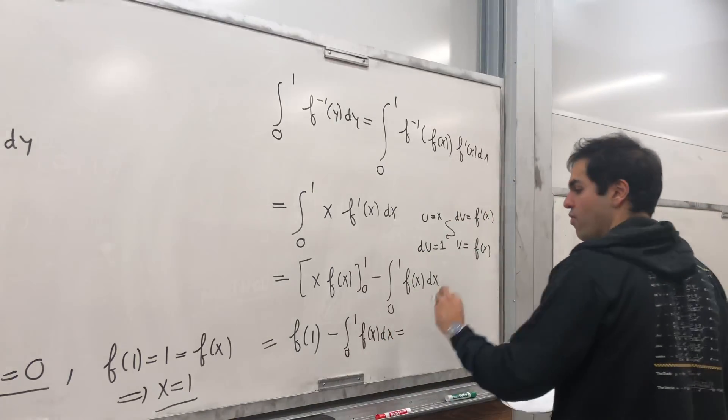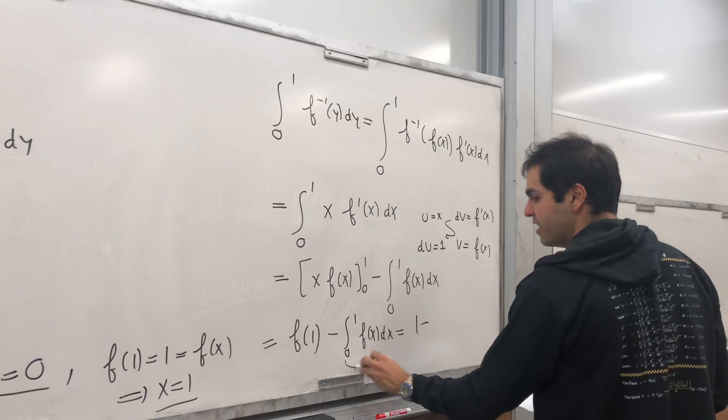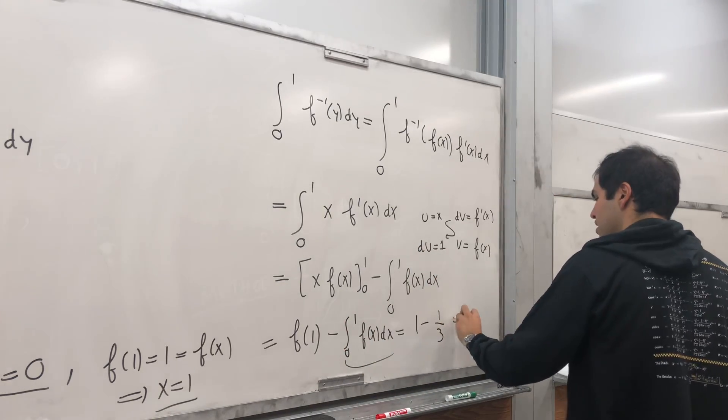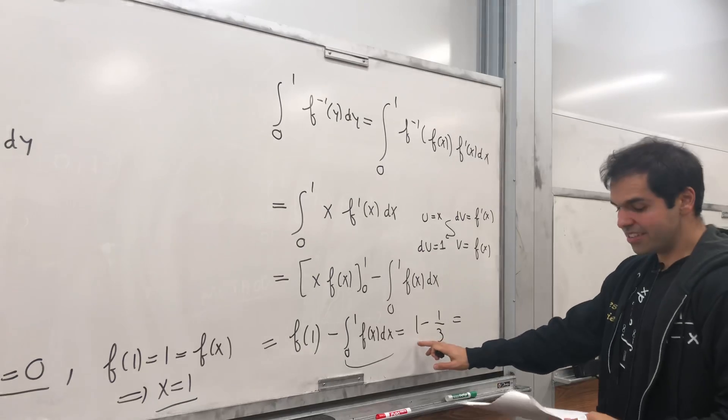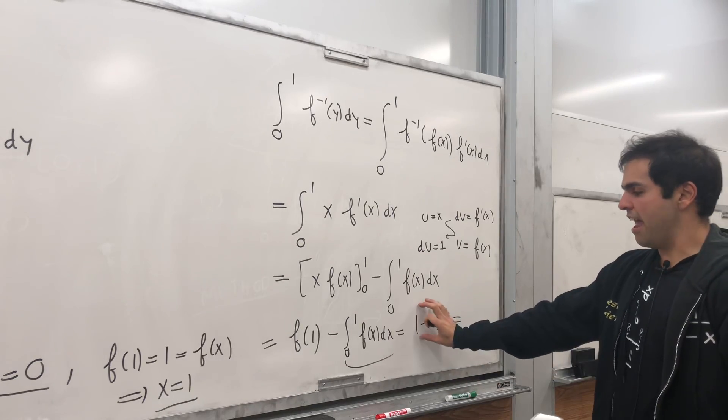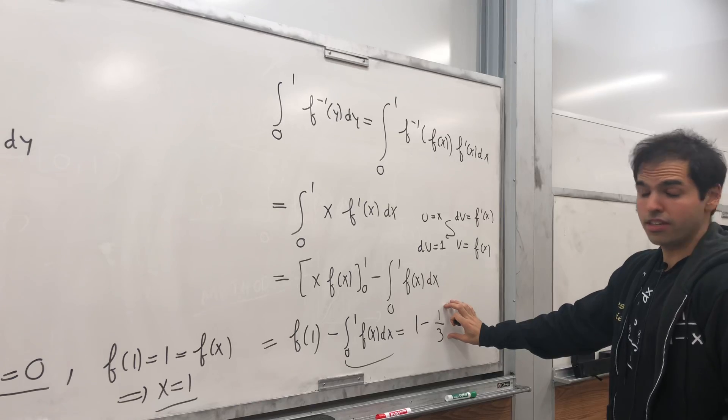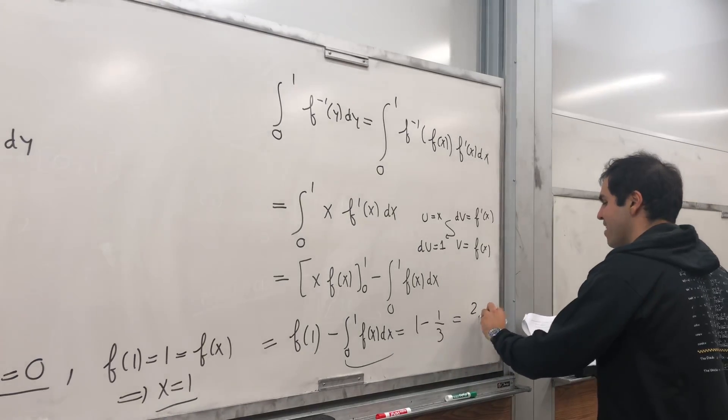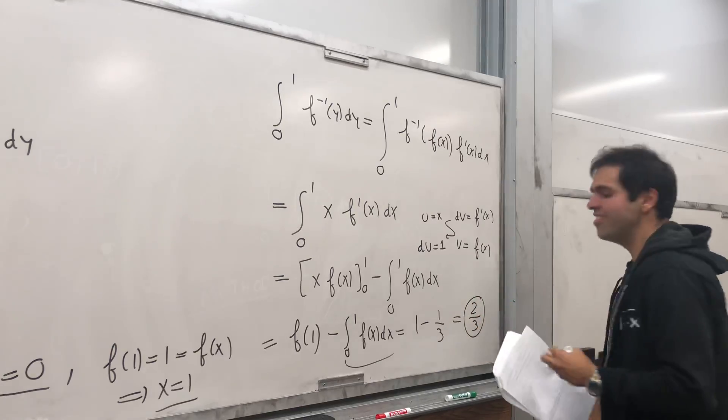And remember, 1·f(1) is 1. And that integral, by assumption, was 1/3. So interestingly, we get the same thing as before. The area of the square minus the integral area under the function. And we get the same answer as before: 2/3!